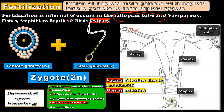Most of the sperms die due to the acidic environment and phagocytic activity of the uterus. The remaining sperm undergo capacitation, which requires 5 to 7 hours. Due to capacitation, the acrosome membrane becomes thin and permeable to calcium. The sperm moves at a rate of 1.5 to 3 mm per minute towards the fallopian tube. Sperms reach the fallopian tube partly by their own swimming and partly by the contraction of the uterus.